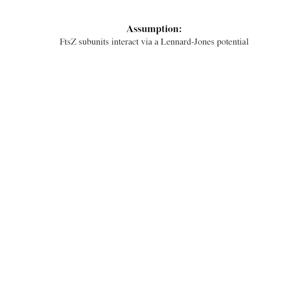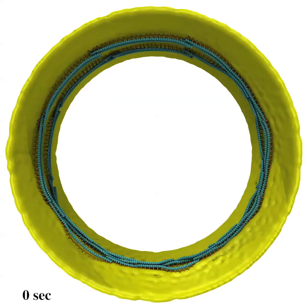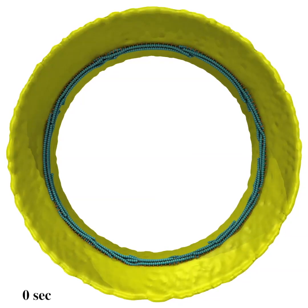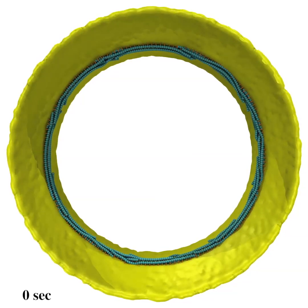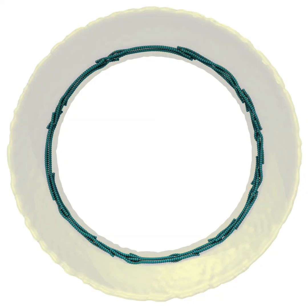We assume that long-range Lennard-Jones interactions between FtsZ subunits on different filaments induce lateral contact. Simulations of this model show that this long-range interaction quickly pulls the filaments together into a multi-layer bundle, preventing filament sliding and ring constriction.